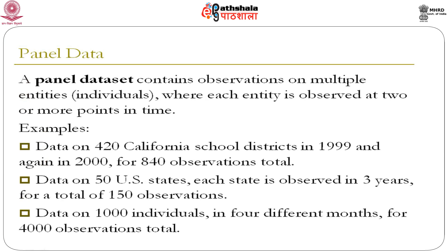A panel data set contains observations on multiple entities or individuals, where each entity is observed at two or more points in time. For example, suppose you have California school district data for 1999 and 2000, giving 84 observations in total. Or data on 50 US states, where each state is observed in 3 years for a total of 150 observations.